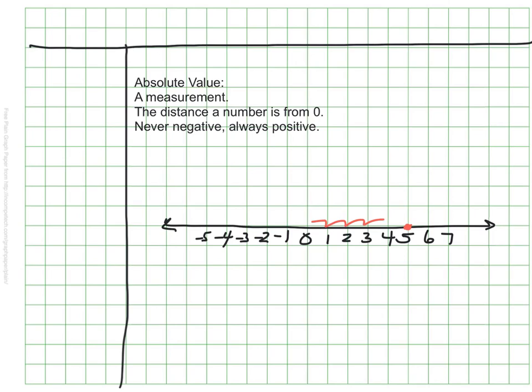The absolute value of negative five is also five because it is also 1, 2, 3, 4, 5 spaces away from zero.